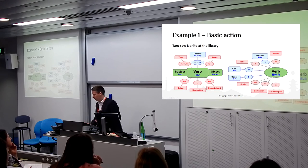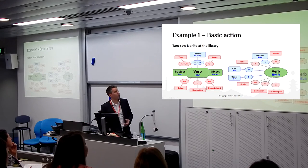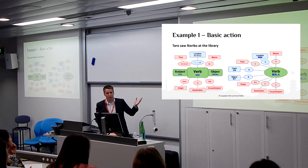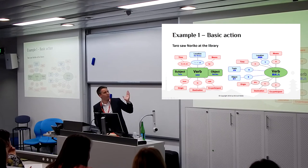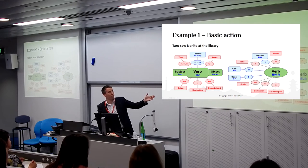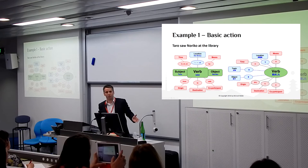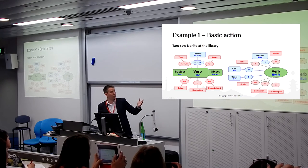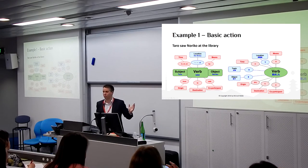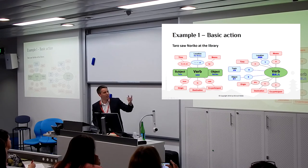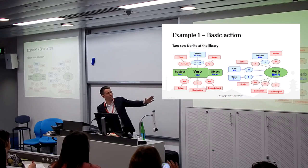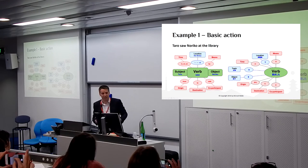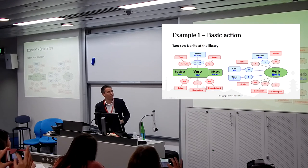So let's look at a basic example: Taro saw Noriko at the library. In English, word order tells us that Taro is the one that saw Noriko. Because Taro comes before the verb, we know Taro is the one that saw her. And because Noriko comes after the verb, we know that she is the one that was seen. In Japanese, the thing that tells us that information is the particle.